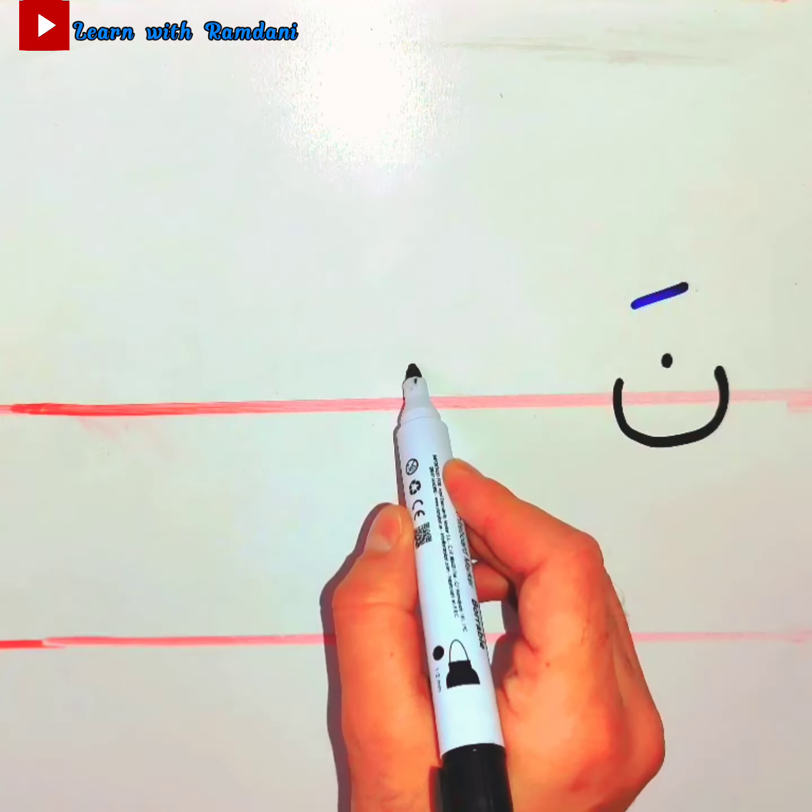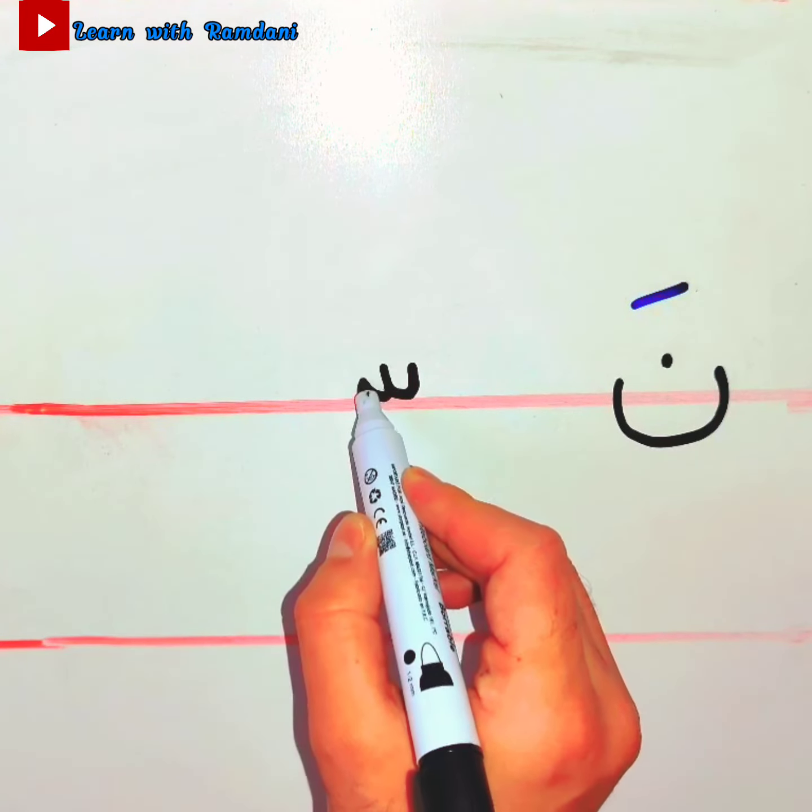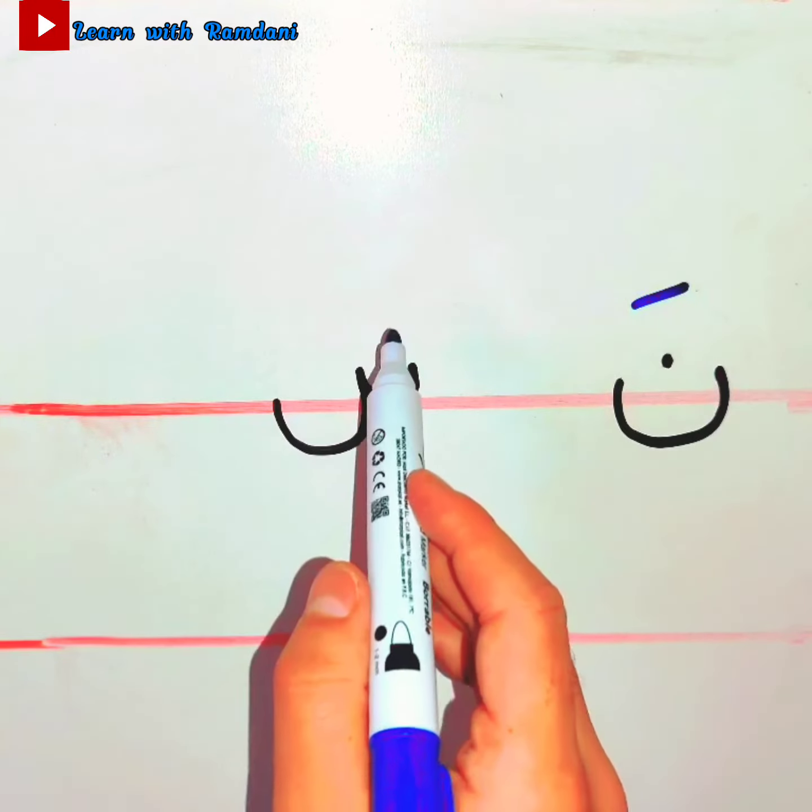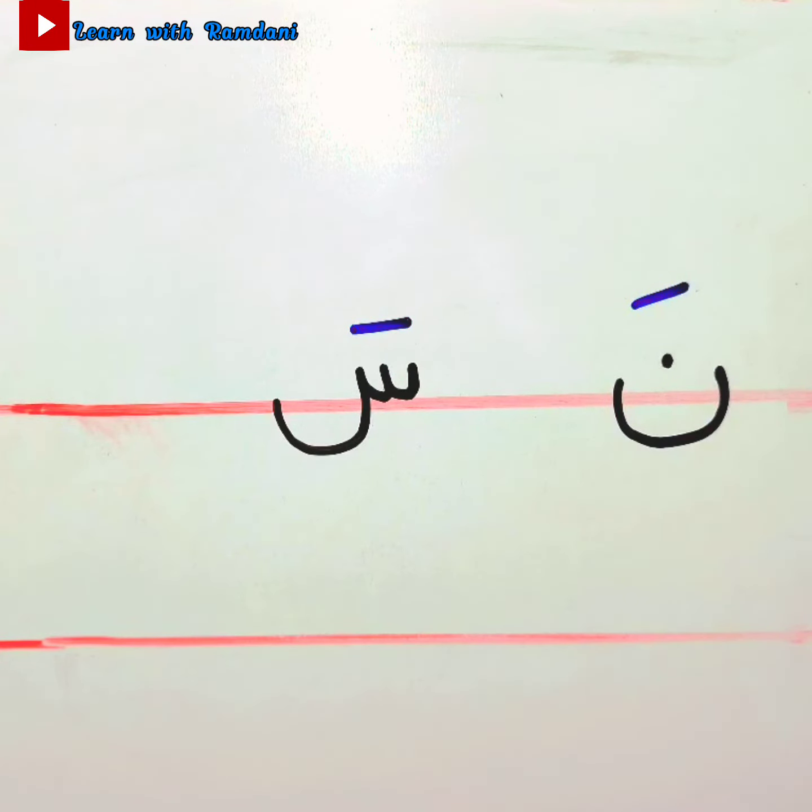And the next letter, it's the letter Sin. We'll put fatha: Sa, sa, sa.